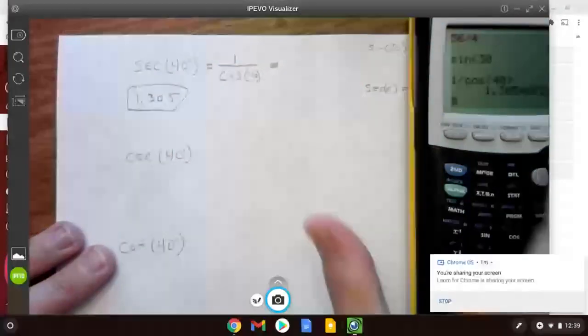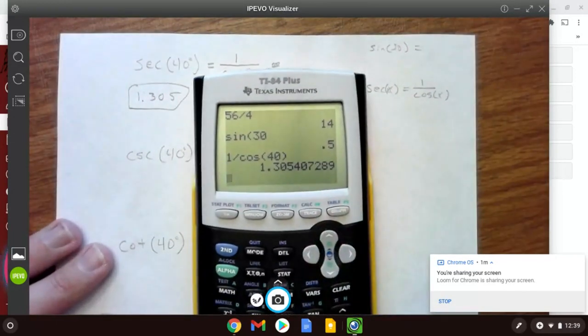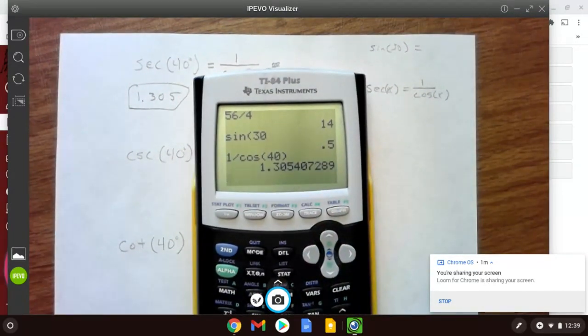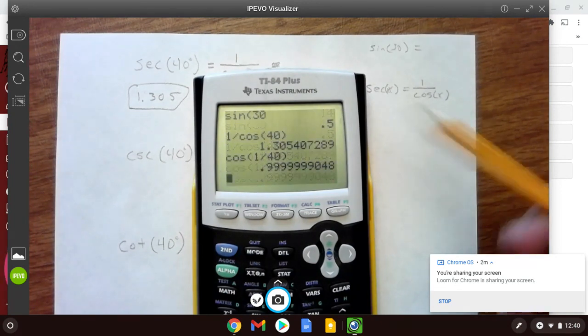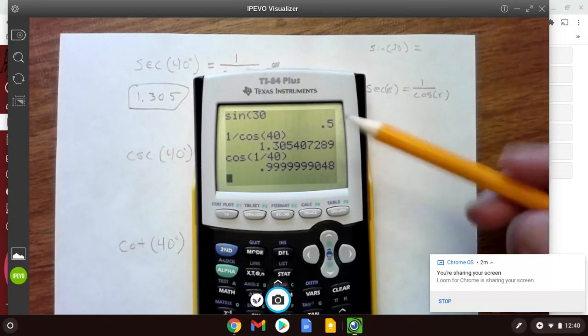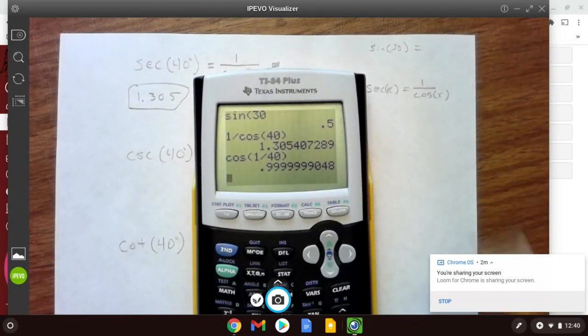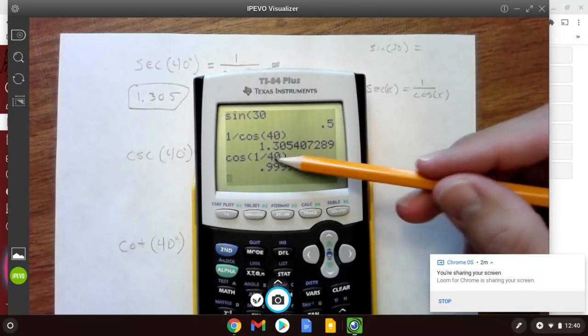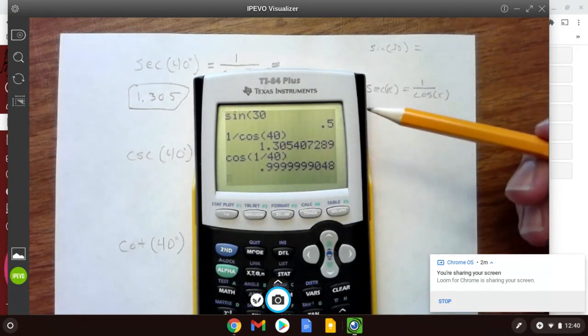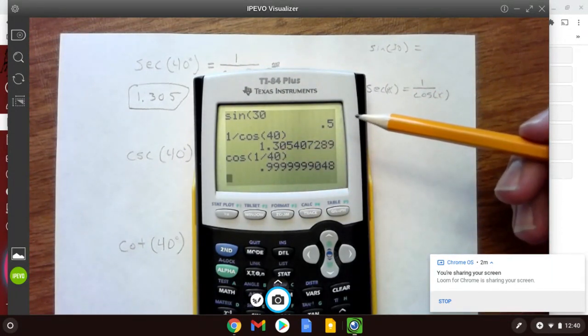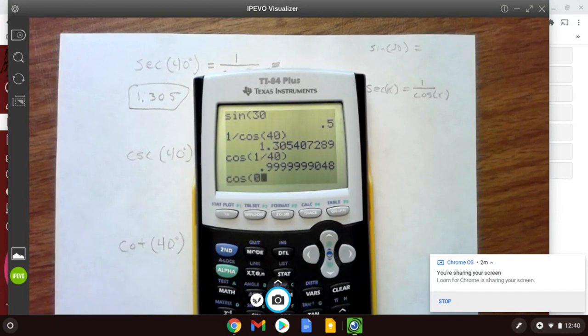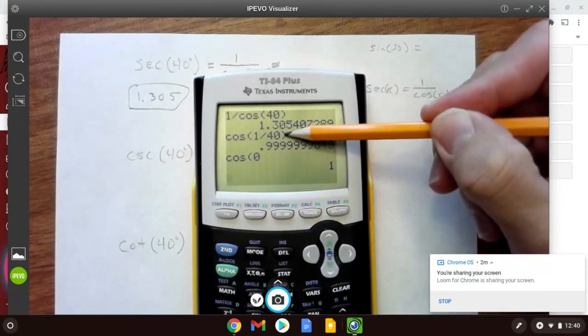Notice it is not the same as cosine of 1 divided by 40. That's a totally different answer, actually getting really close to 1, because 1 divided by 40 is really close to 0, and cosine of 0 equals 1.